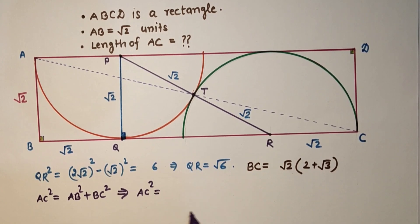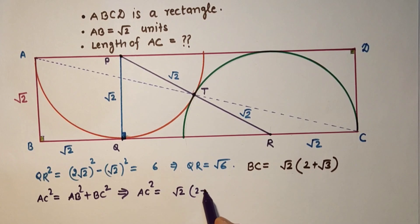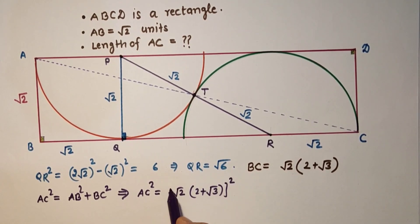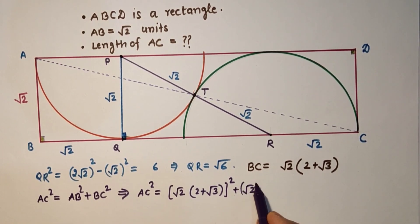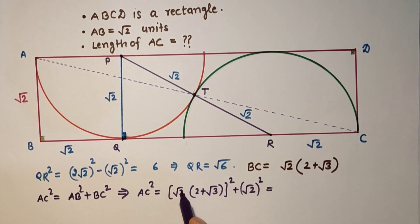AC square is equal to BC square, root 2 times 2 plus root 3 the whole squared, plus root 2 squared. Root 2 squared is 2.